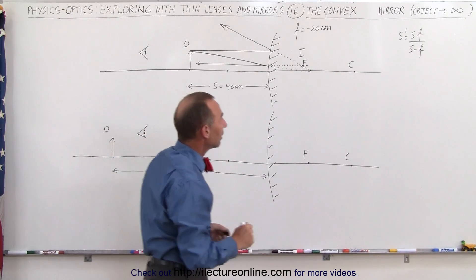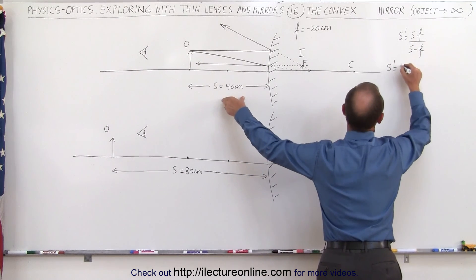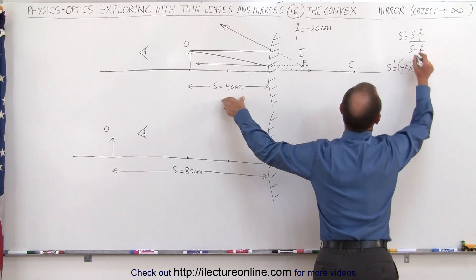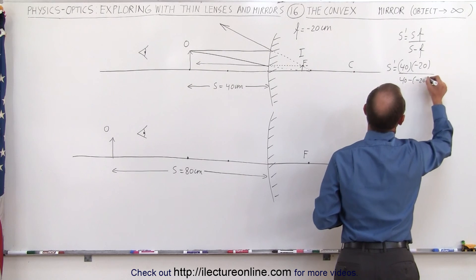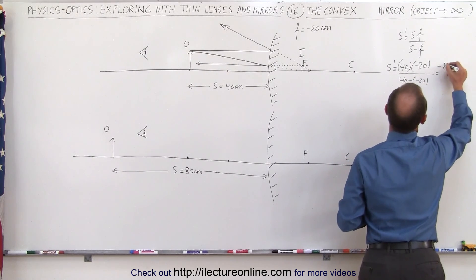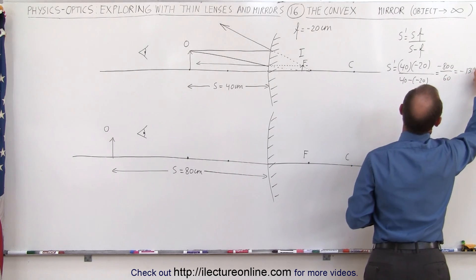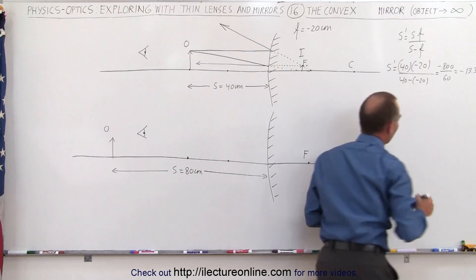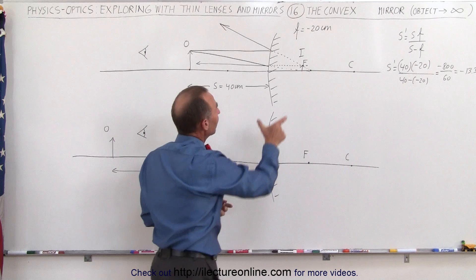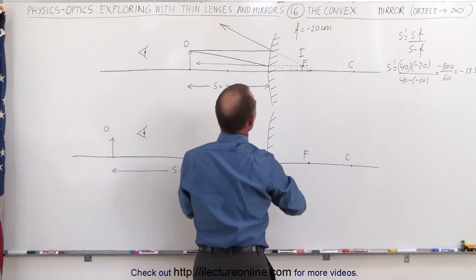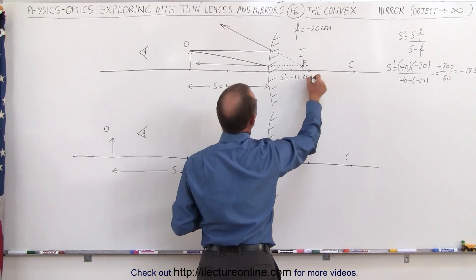Now where is the image located? Let's use our equation to find it. S prime equals S times F over S minus F. S is 40 centimeters, F is minus 20, so we get 40 times minus 20 divided by 40 minus a minus 20. This is minus 800 divided by 60, which equals minus 13.3 centimeters. The negative sign means it's behind the mirror, therefore a virtual image, at a distance of 13.3 centimeters from the mirror.